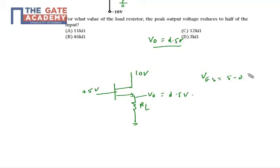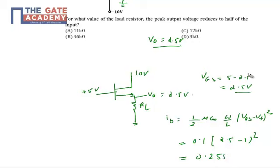I know the drain current equation: ID will be equal to 1.5(VGs - Vt)². Now I can put all the values: 0.1(2.5 - 1)². So my ID current is equal to 0.255 milliamperes, which is the drain current of the circuit.